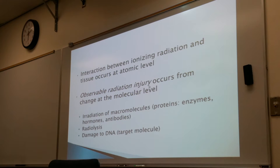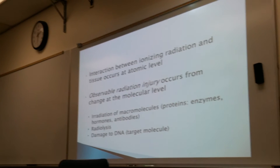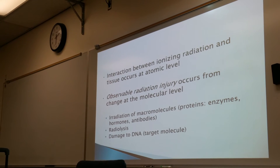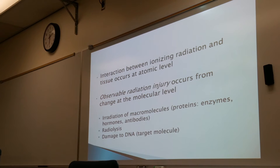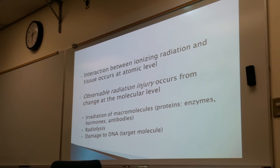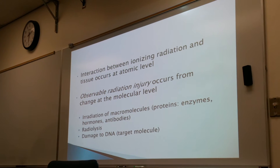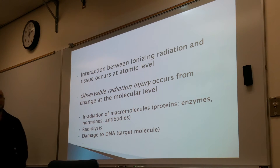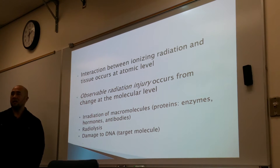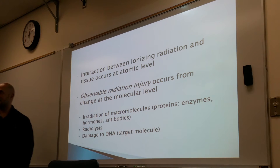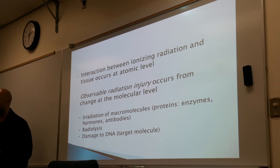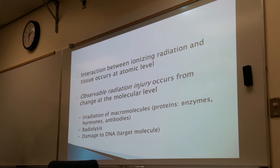Interactions between ionizing radiation and tissues occur at an atomic level — we're talking about the electrons here. Two of the effects we will be discussing are a direct effect and an indirect effect. Again, we're talking about the atomic level.